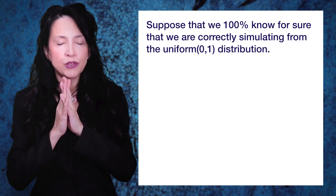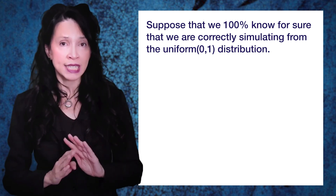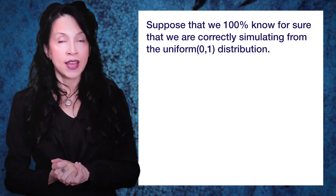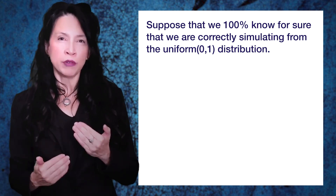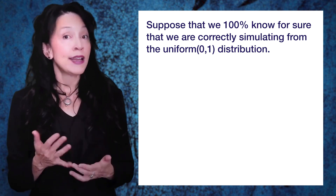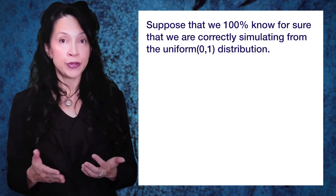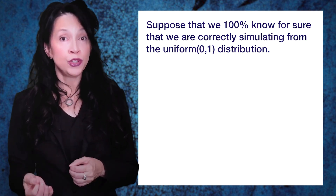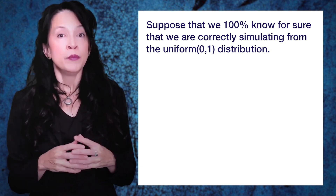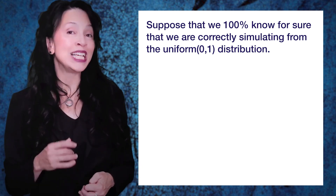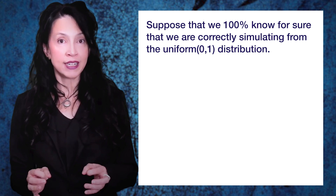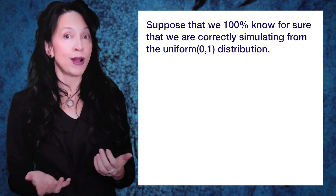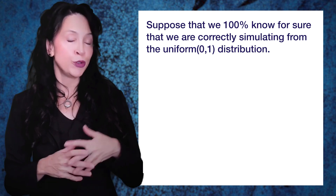Suppose that we have a true random number generator — there's nothing pseudo about it, there are no mistakes. It will definitely spit out realizations of the uniform 0-1 distribution. I want to talk about the probability we should be in a certain region versus another region. I'm going to let U1, U2 up through U100,000 be the values that this random number generator is going to produce. Because it's perfect and it hasn't produced them yet, U1 through U100,000 is a collection of random variables — it is a random sample.